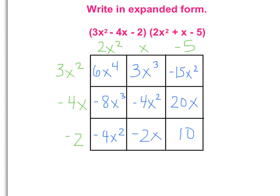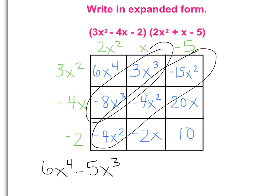So now all I have to do is do my combining. So looking at the diagonals, the 6x to the fourth doesn't have anything to combine with. My x to the third power I can combine to get negative 5x to the third. My diagonal here with x squared,